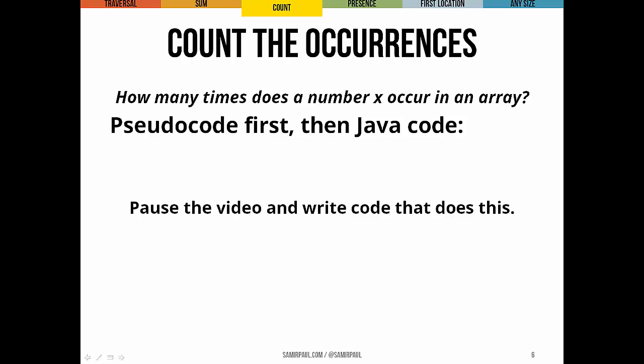We can also count the occurrences of a particular value in this array. So we want to count how many times a particular number appears in the array. So this is a first exercise. Stop and think through some pseudocode, and then translate that pseudocode into Java. A pseudocode that counts the number of times that a particular value appears in an array of 500 integers. So go pause the video. Come back in a second.